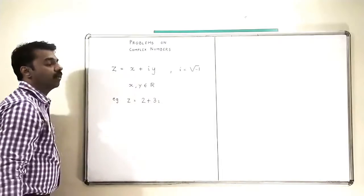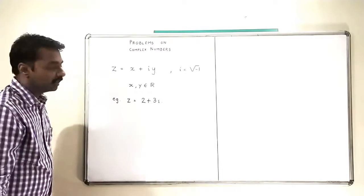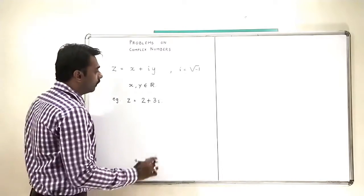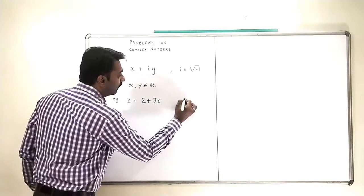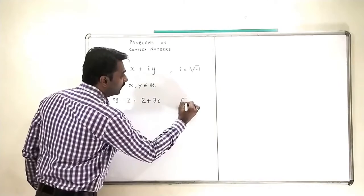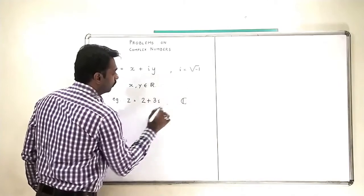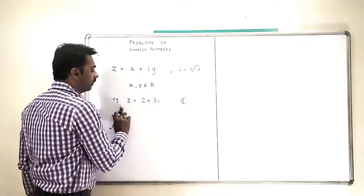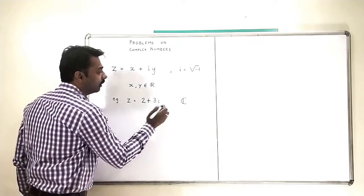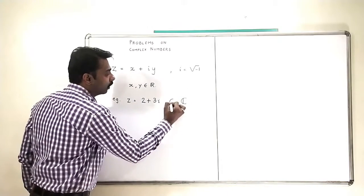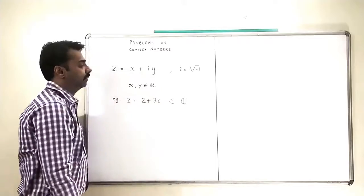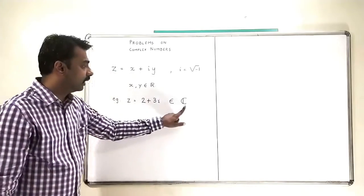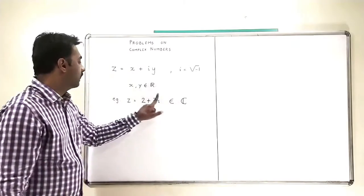This is a complex number. The set of complex numbers is denoted by C. So this Z, a complex number, belongs to C. C is the set of complex numbers.